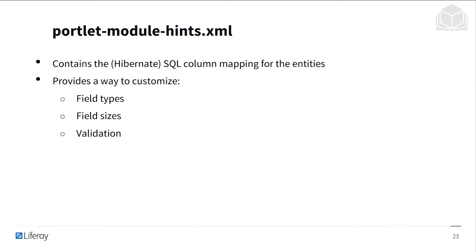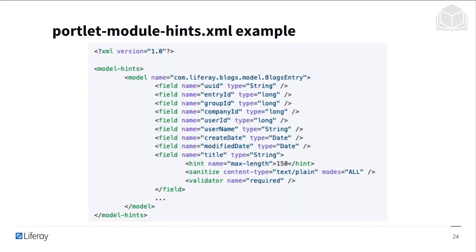Next up, we have the portlet model hints XML. This contains the SQL column mapping for the entities, giving us a way to define field types, field sizes, and validation. Here's an example of a portlet model hints XML, which we'll also be touching upon in our exercise. You can see in the field tag with name 'title' that there are options configured: a max length of 150, the content type is plain text, and this is a required field.